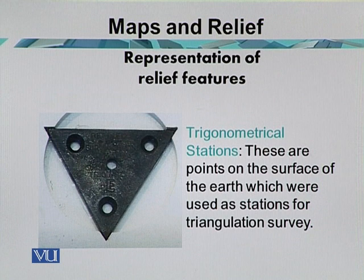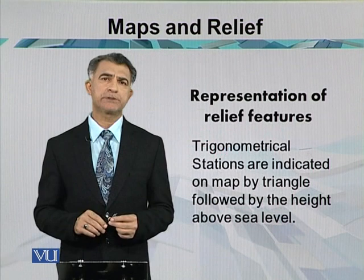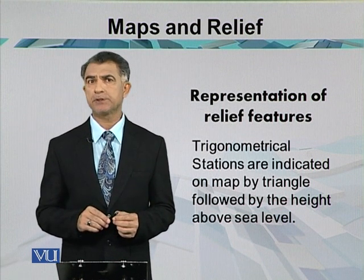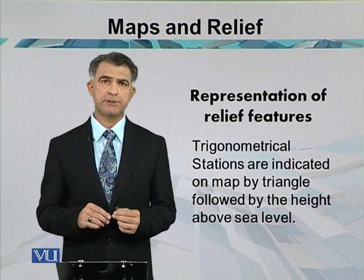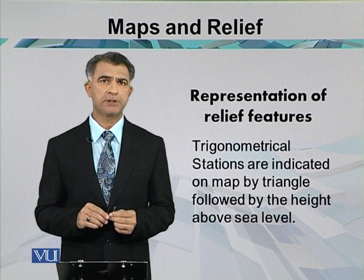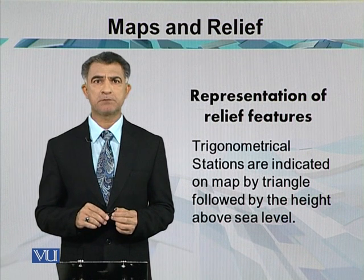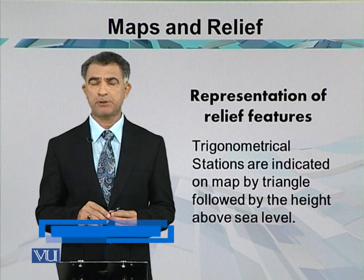The next important method for representation of relief features when dealing with elevation is trigonometrical stations. These are points on the surface of the earth used as stations for triangulation surveys. The older techniques used in triangulation surveys include chain survey, plane table survey, theodolite survey, and prismatic surveys. The recent tools used include the total station and automatic level.